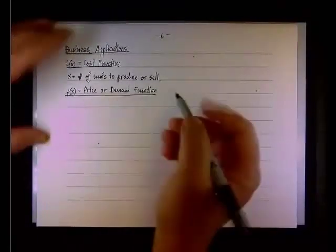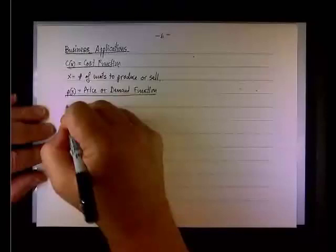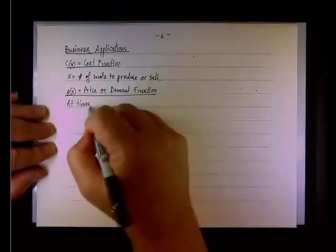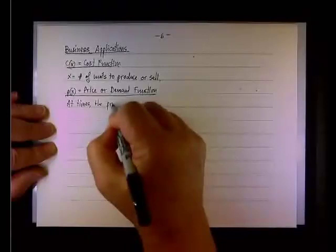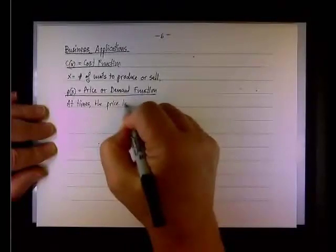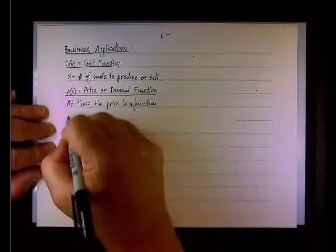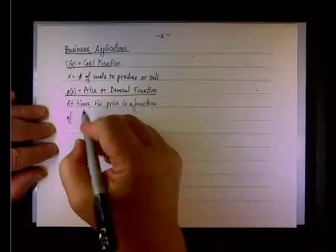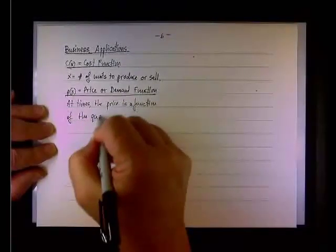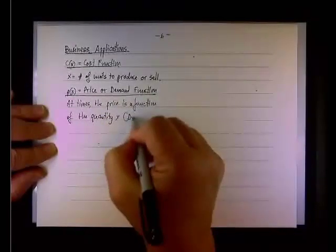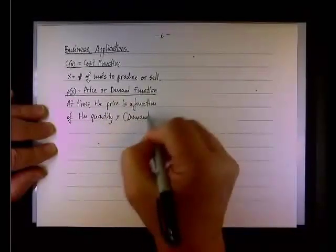For instance, if you look at the price of oil. At times, the price is a function of the quantity x. That's what we call demand.